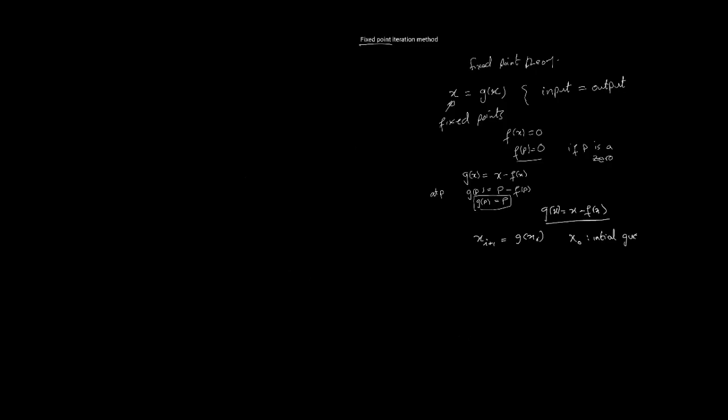Let's look at an example: x squared minus x minus 1 equals 0. We can find the roots of this equation. It's got two real roots: 1 plus or minus square root of 5 over 2, which means the roots are 1.618 and minus 0.618.